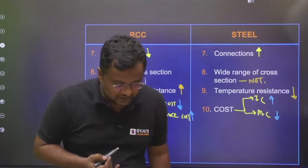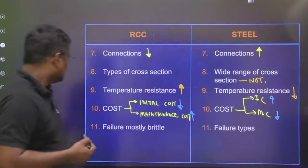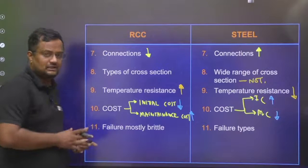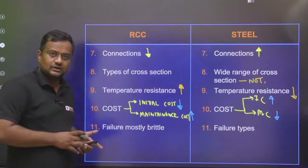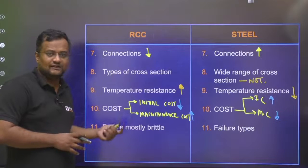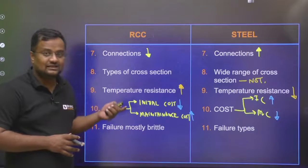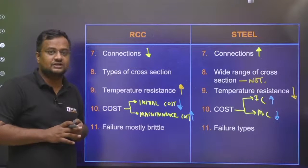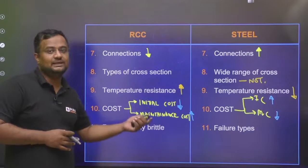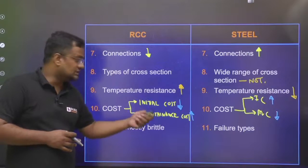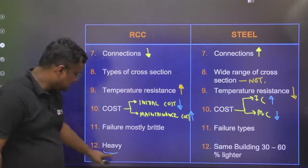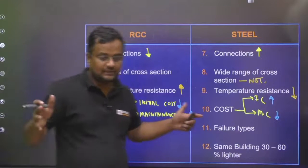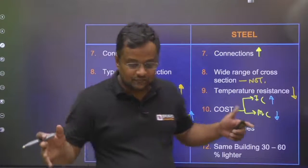Regarding failure mode: failure of RCC will mostly be brittle failure. But in steel, since it is very good in both compression and tension, failure will mostly be ductile.